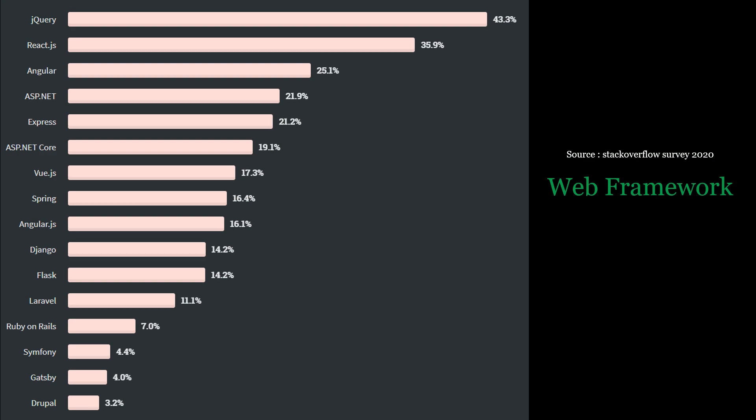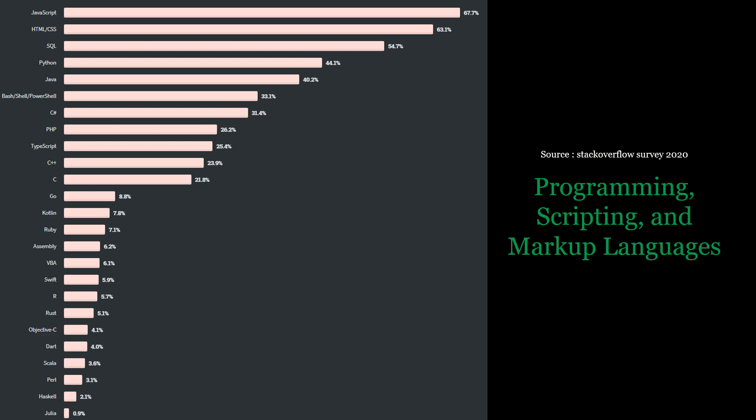Don't get confused by the percentages. As a .NET developer, I'm aware of ASP.NET, ASP.NET Core, jQuery, and Angular, so my vote goes to all four technologies — that's why the percentages can add up beyond 100%. Looking at the popularity of programming, scripting, and markup languages: JavaScript tops the list, Python is at number 4, Java at number 5, and C# at number 7. Not bad actually.